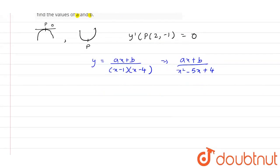Now, if P is at (2, -1), this can be written as -1 = (2A + B) / (1 × -2). That equals 2A + B = 2. Let's say this is equation 1.